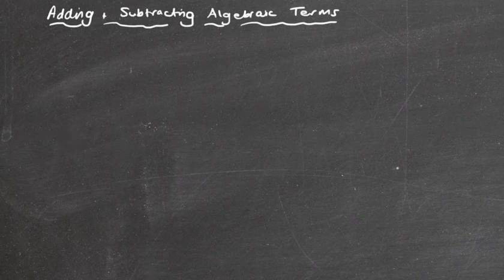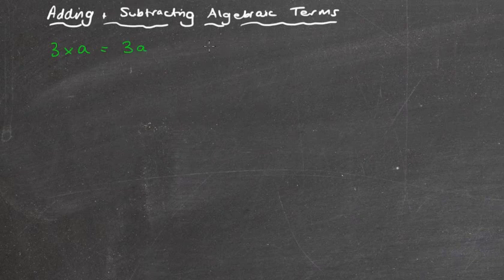I'm going to take it that you've looked at the basics of algebra, where things like simplifying 3 times a is the same as saying 3a, or 2 times y is the same as saying 2y. They're the very basics. So what we're going to be looking at is what a term is and how to add or subtract a term.